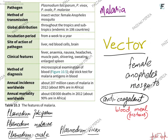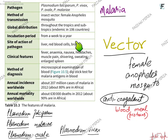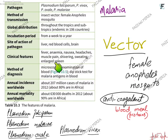The global distribution has already been covered. The incubation period is about a week to a year. The site of action is mainly in the human liver, red blood cells, and brain — red blood cells and liver are the main targets initially, but if the pathogen reaches the brain, this can be fatal. Clinical features include fever, anemia, nausea, headache, muscle pain, shivering, sweating, and an enlarged spleen due to destruction of red blood cells. The method of diagnosis is via a blood smear examined under a microscope.